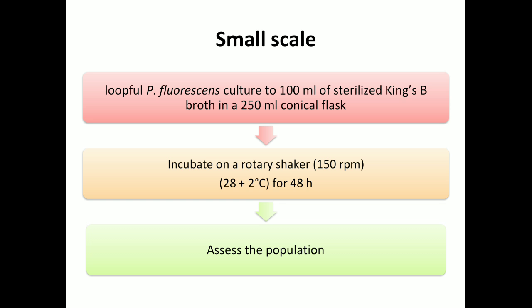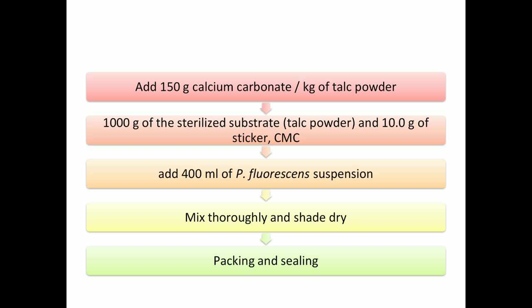Then check the population of the bacteria with the help of a colony counter or hemocytometer. Next, adjust the pH to 7 by addition of 150 grams of calcium carbonate and sterilize it in an autoclave for around 30 minutes at 15 psi.